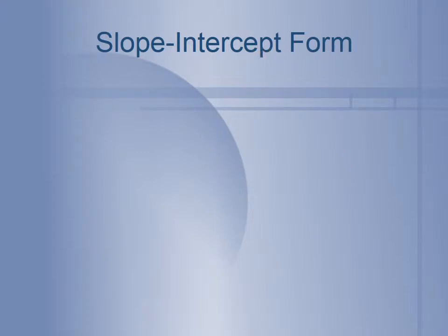The reason the slope-intercept form is so important is because it tells us two things. It tells us the slope, which is super important because we had a whole section on that. It also tells us about the intercept. We know that we solve for the intercept by letting x equal 0 or y equal 0. So it's going to tell us one of the intercepts without us having to solve for it — super useful.